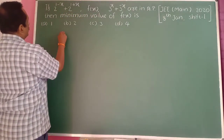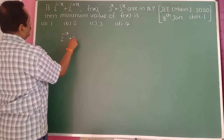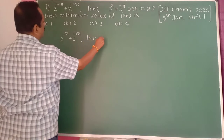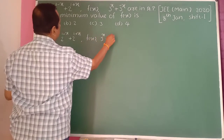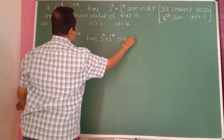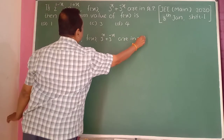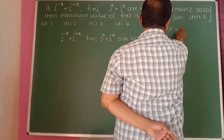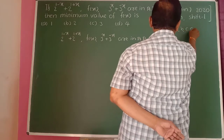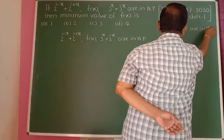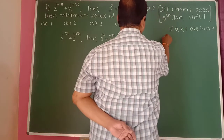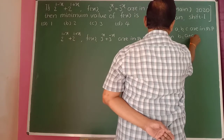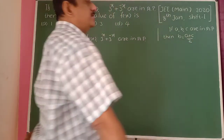These 3 terms are in AP: 2 raised to 1 minus x plus 2 raised to 1 plus x, then f of x, then 3 raised to x plus 3 raised to minus x are in AP. You know that if A, B, C are in AP, then the arithmetic mean formula gives B equal to A plus C divided by 2.